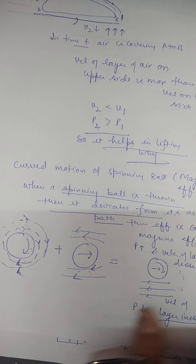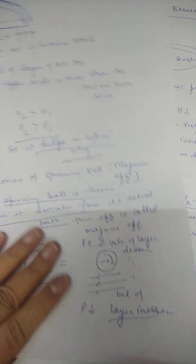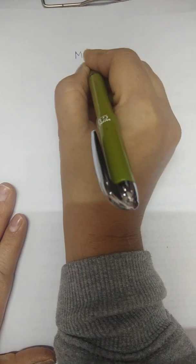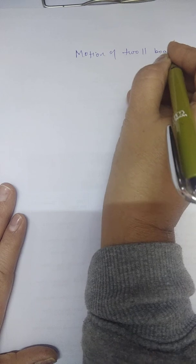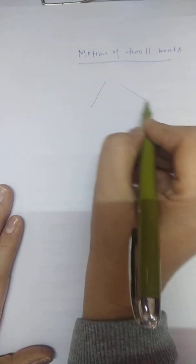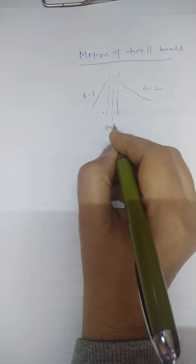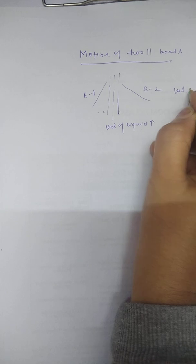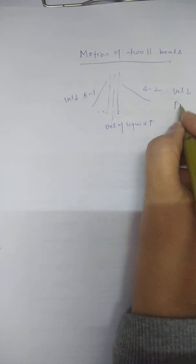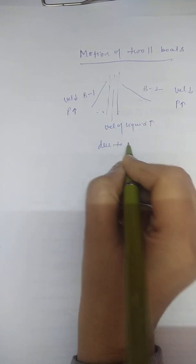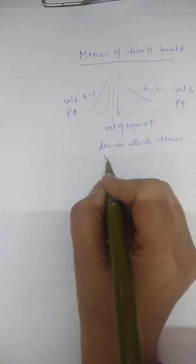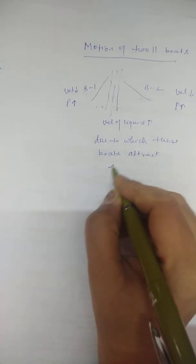The next application is the motion of two parallel boards or boats. If two boats are moving parallel in a river or sea, the velocity of liquid between them is greater, while the velocity of the outer layers is less. Therefore, pressure increases on the outer sides and decreases between the boats, causing the two boats to attract each other.